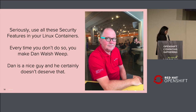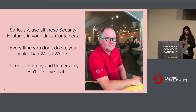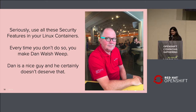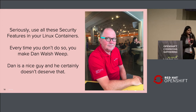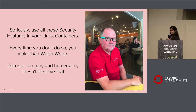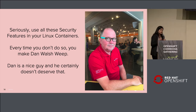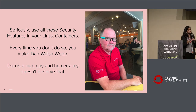Now we have built our container image, tested it locally, and pushed it to a public registry. The next step is running it in a production cluster — and that's where CRI-O comes in. CRI-O is a lightweight container engine used to run container deployments in a Kubernetes or OpenShift cluster. CRI-O is OCI-compatible, meaning it supports all OCI-compatible images and all OCI runtimes, such as RunC, Kata, and gVisor.